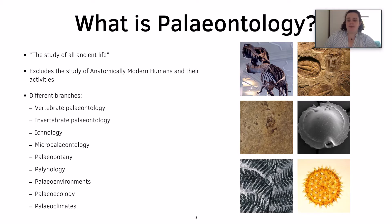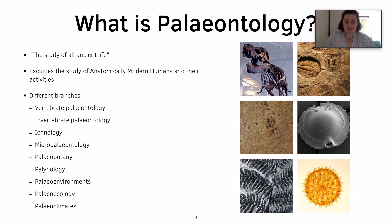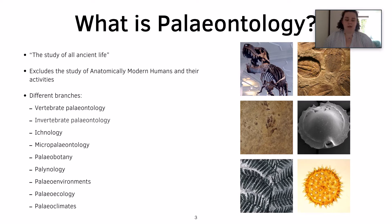Invertebrate paleontology is the study of organisms without a backbone, such as the trilobite on the top right. Ichnology is the study of trace fossils. Micropaleontology is the study of micro fossils such as foraminifera, pollen, spores, and diatoms.